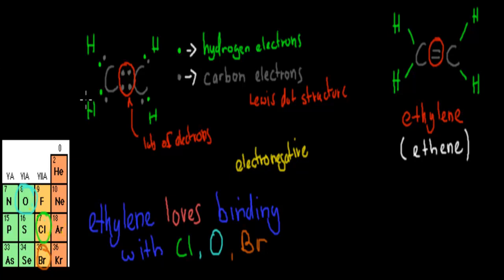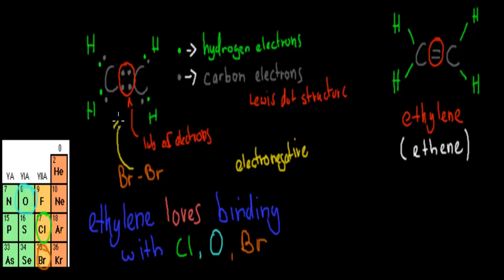You can imagine bromine — bromine is usually a liquid. Even though the two bromine atoms are connected and bonded and should be happy, they still love electrons. They're still attracted to the electron-dense area in ethylene. I'm going to give a slightly inappropriate analogy, but it's a really easy way to visualize it.